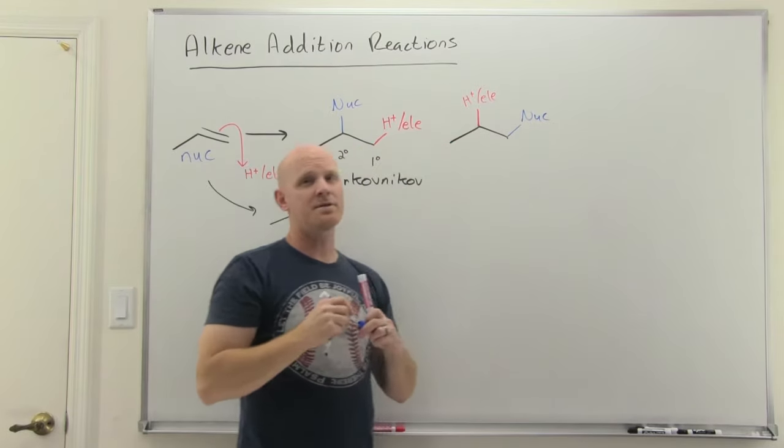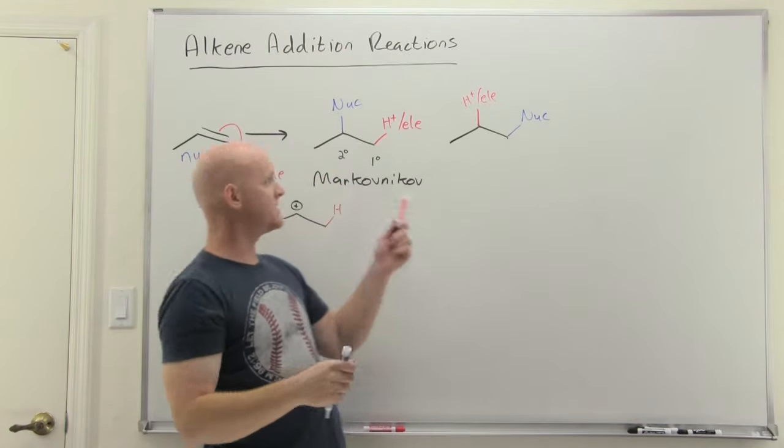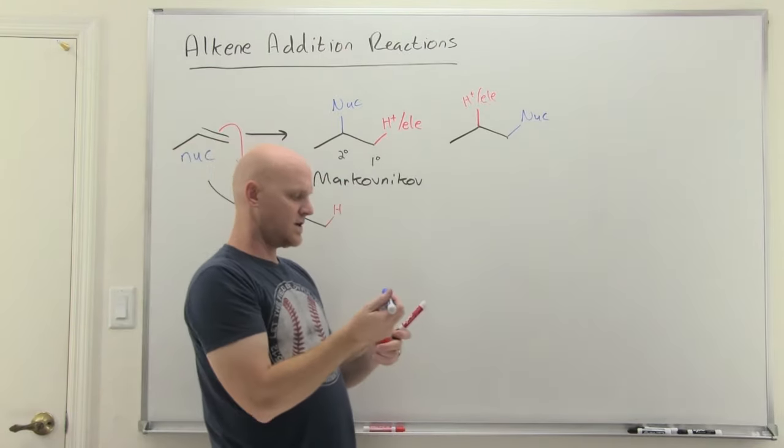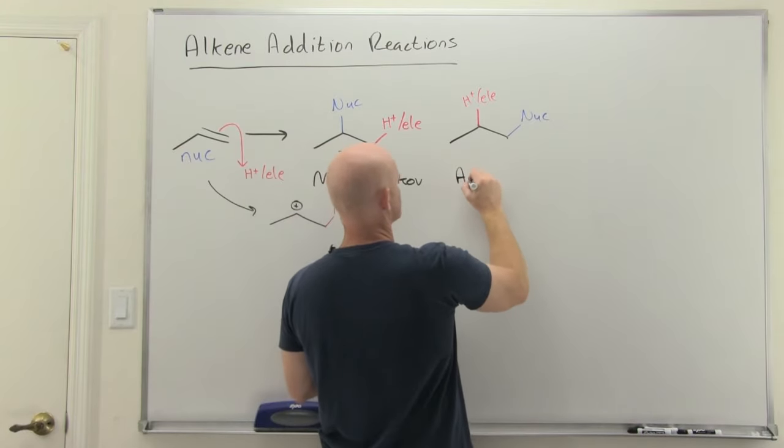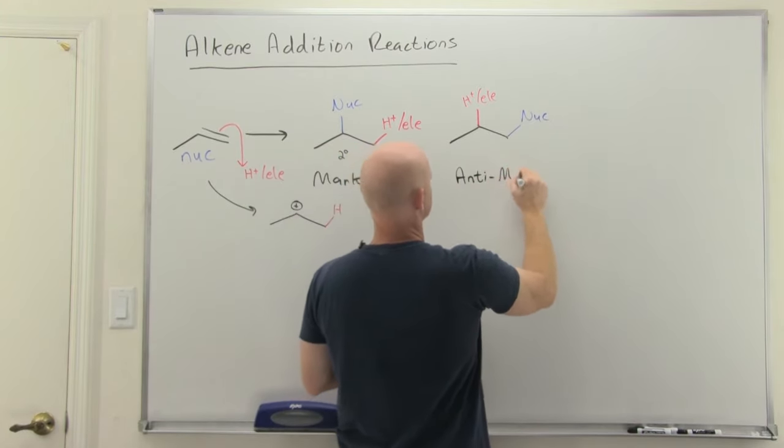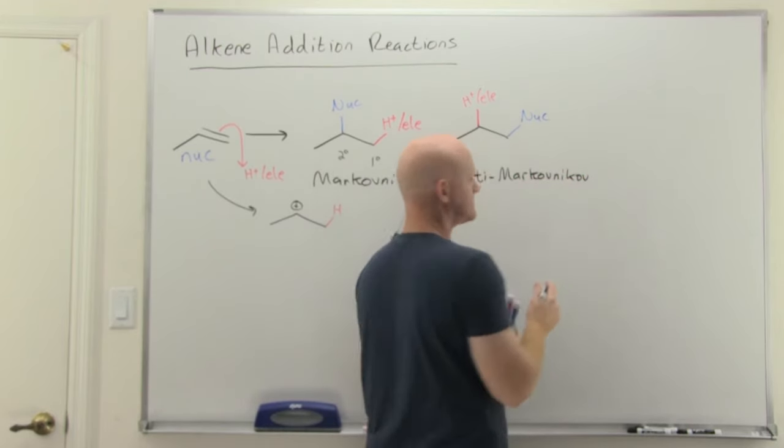And this is way less common. In fact, we're only going to cover two out of our like 15 reactions that will end up going opposite of Mr. Markovnikov's rule here. And when it goes opposite Markovnikov's rule, we just call it anti-Markovnikov. We don't get too creative on the name.